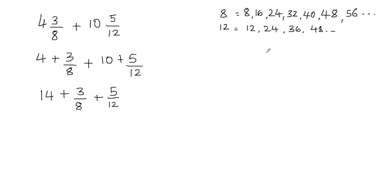Now we're looking for the least common multiple. We're going to see which multiples are common in both. I see that 24 is common in both, and 48 is common in both — and we can find more. But we're looking for the least common multiple, which is the smallest multiple common in both, and that is 24.